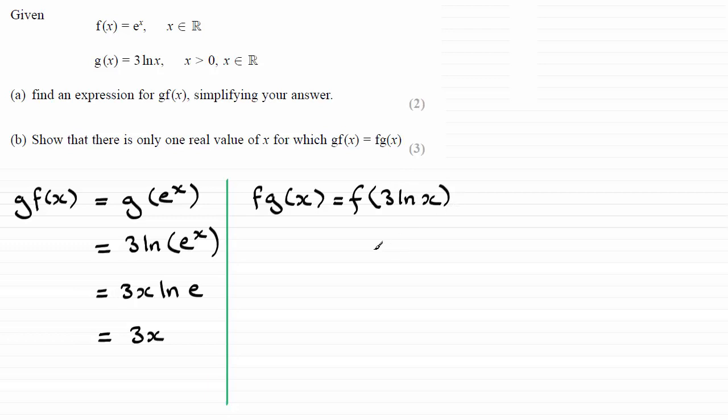And all I need to do now is substitute 3 times the natural log of x for any x in f of x. So that's going to mean that we get e to the power 3 times the natural log of x.